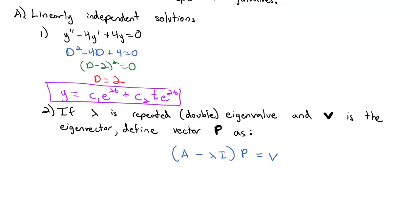The reason we do that is because then the solution is given by x equals c1 times the vector v e to the lambda t, that's the first root just like we always did, plus c2 times the eigenvector times t e to the lambda t, and then we add that p vector we found times e to the lambda t. That's how we get the linear independence.